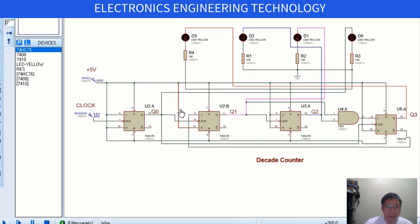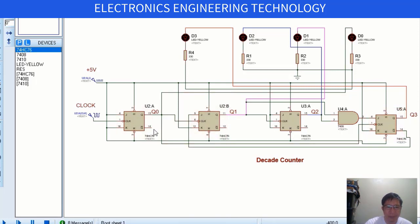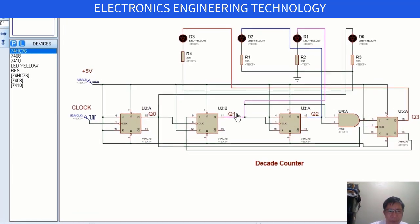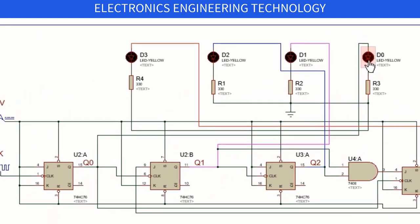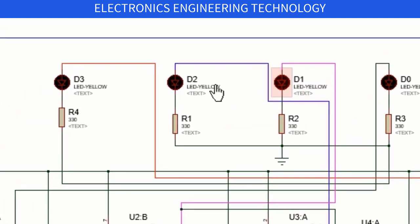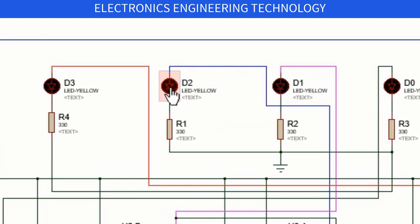The circuit is comprised mainly of four JK flip-flops with presets and clear inputs that are activated by logic level 0. Initially, the outputs of the four flip-flops are at logic level 0 and are coupled to the indicator LEDs D0, D1, D2, and D3 respectively.